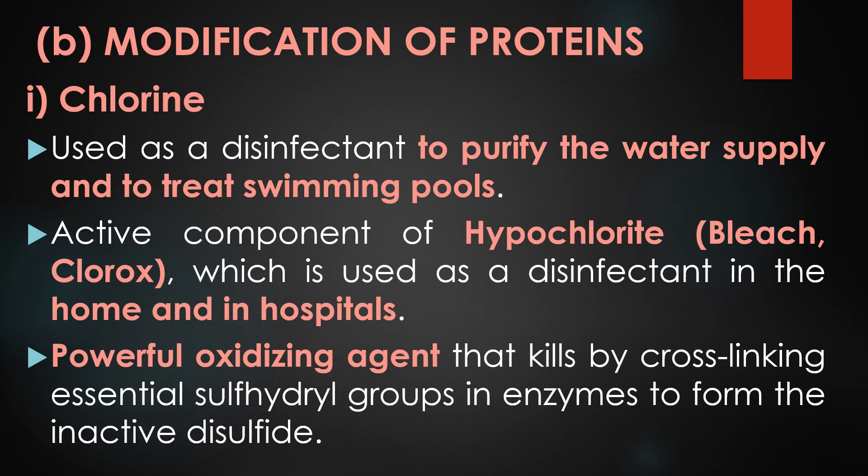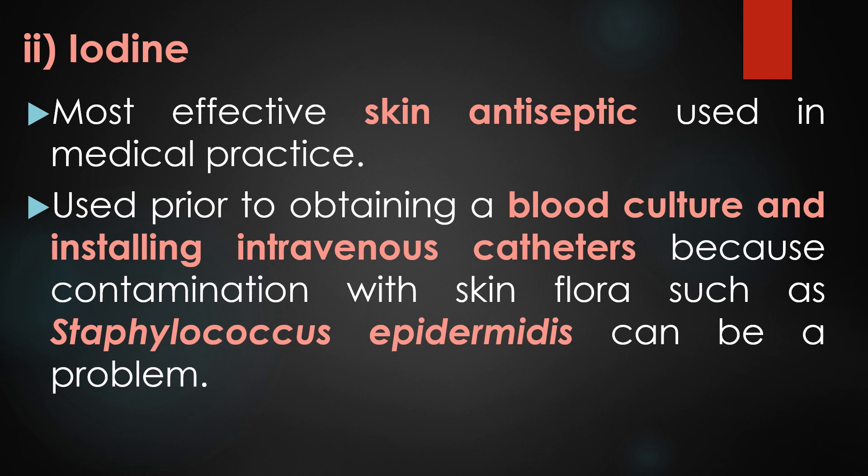The second mode of action is modification of proteins. The first disinfectant in this category is chlorine. Chlorine is used to purify the water supply and to treat swimming pools. It is an active component of hypochlorite (bleach) and chloroids used as disinfectants in homes and hospitals. Chlorine is a powerful oxidizing agent that kills microorganisms by cross-linking essential sulfhydryl groups in enzymes to form inactive protein disulfides.